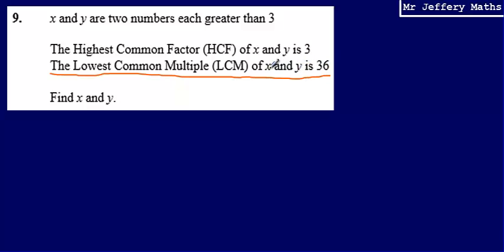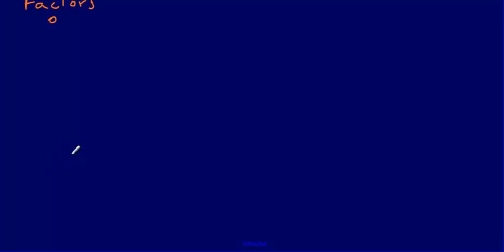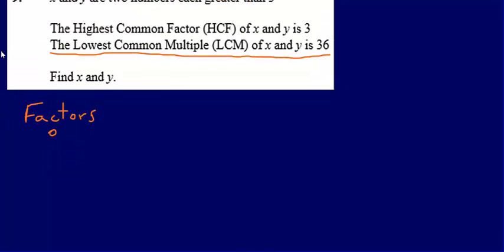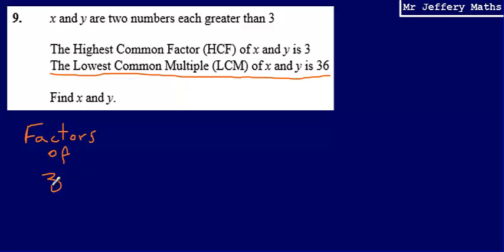If the lowest multiple of x that is also a multiple of y is 36, that means that 36 can be divided by x and y. So the first thing I'm actually going to do, even though it's asking about the lowest common multiple, is write down what the factors of 36 are.